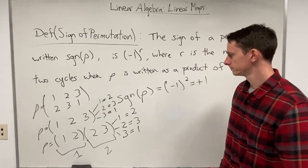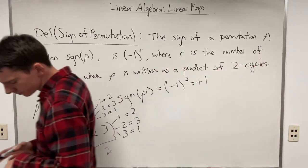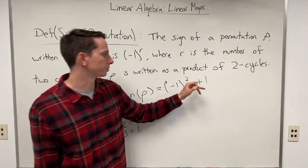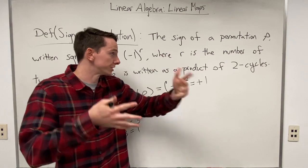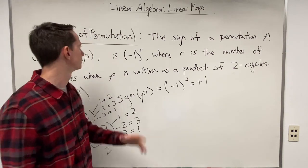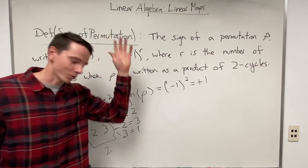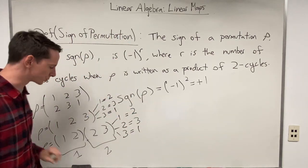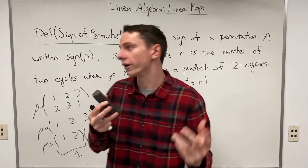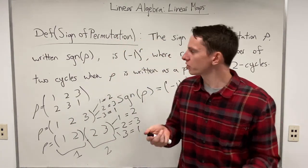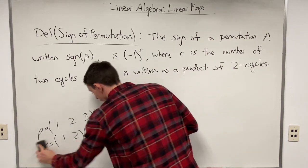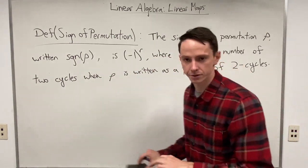The sign function partitions permutations into one of two possible categories — either plus one or minus one. We're almost done. The last thing we're going to do is write out the definition of the Levi-Civita symbol, which is essentially a compact way of quantifying the sign of a permutation, with a little bit more to explain.